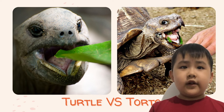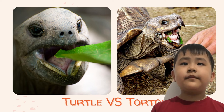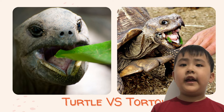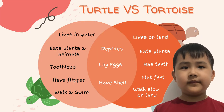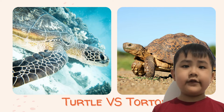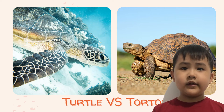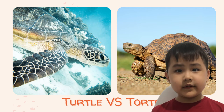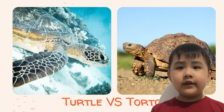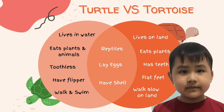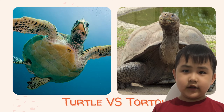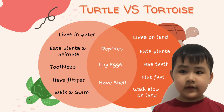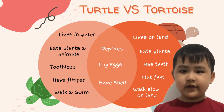Turtles are toothless. Tortoises have teeth to chew the plants. Turtles have flippers to swim. Tortoises have flat feet. Turtles walk and swim. Tortoises walk slow on land. Thank you for the attention and goodbye!